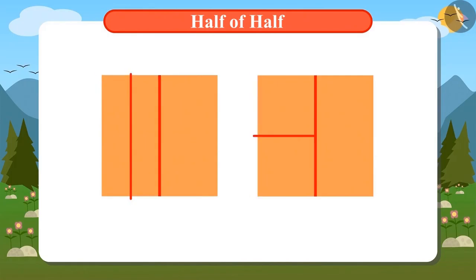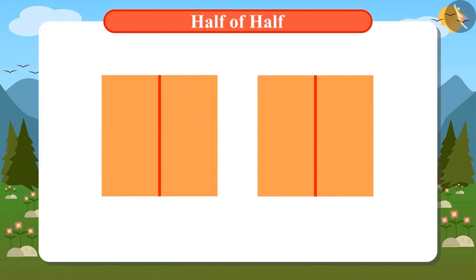I can divide it in two more ways: by drawing a line that joins the upper left corner with the lower right corner, and by drawing another line that joins the upper right corner with the lower left corner. Absolutely correct, Vandana.